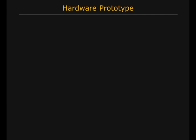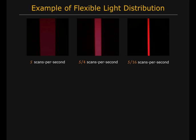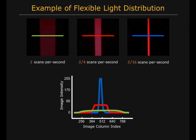Since current light sources have a fixed light distribution, we build a prototype light source that supports flexible light distribution, implemented by varying the scanning speed of a laser scanner. Here is an example of three different light distributions on a planar scene. All images were acquired with the same camera exposure time, and the intensities are plotted along the marked scan line. From left to right, the illuminated area decreases but the intensity increases.